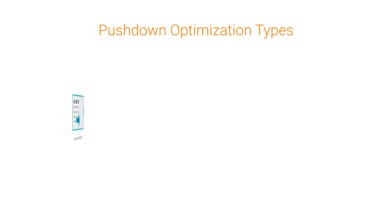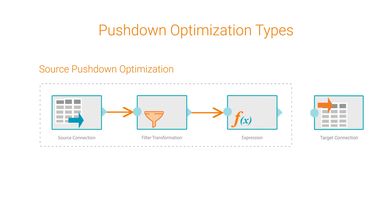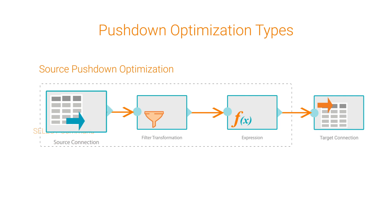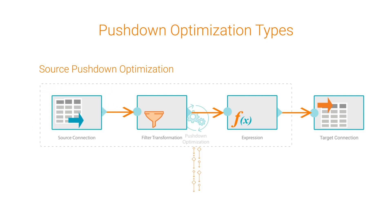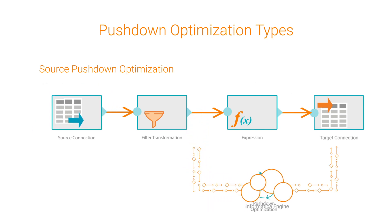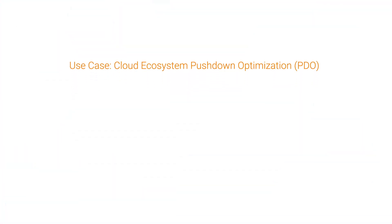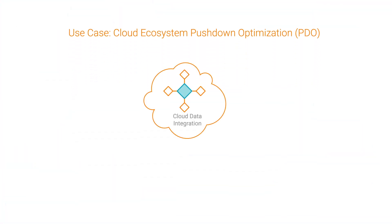With Source Pushdown Optimization, the mapping logic up to and including the expression is converted into a select command that the connection configured for the mapping source runs. The Informatica engine receives the results and writes to the target. You can configure Pushdown Optimization for most Cloud Ecosystem Connectors.